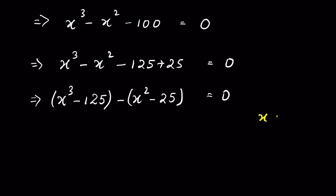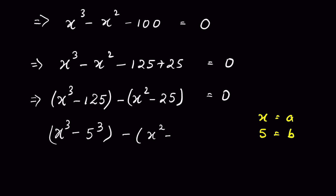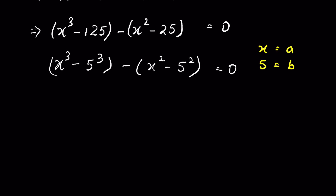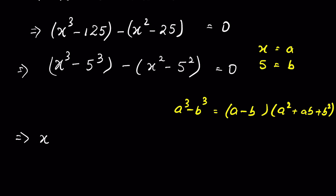Now if we consider x as a and 5 as b, then x cubed minus 125 is in the form of a cubed minus b cubed. This algebraic expression expands as a minus b, times a squared plus ab plus b squared. So we can write it as x minus 5, times x squared plus 5x plus 5 squared.